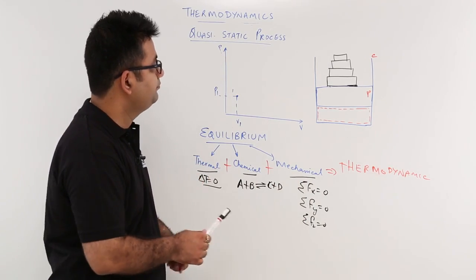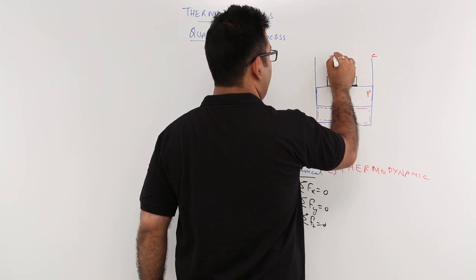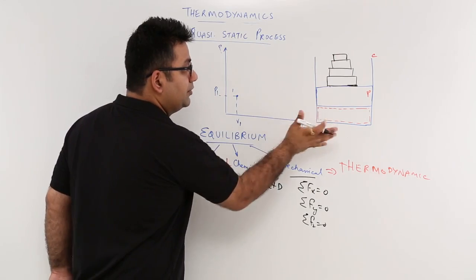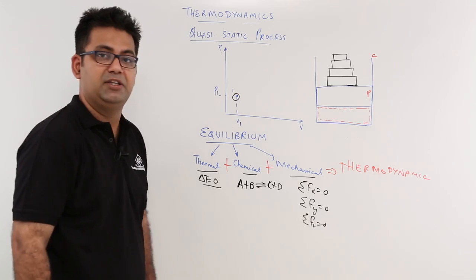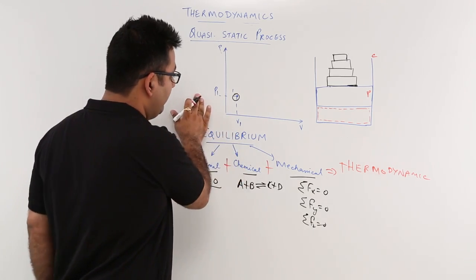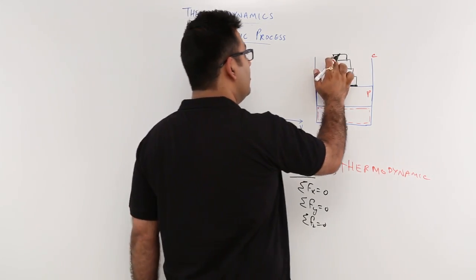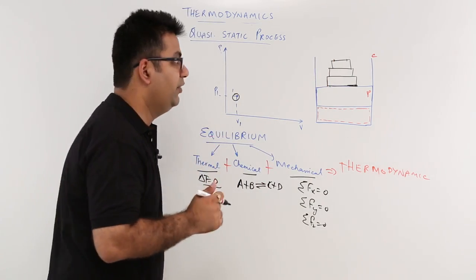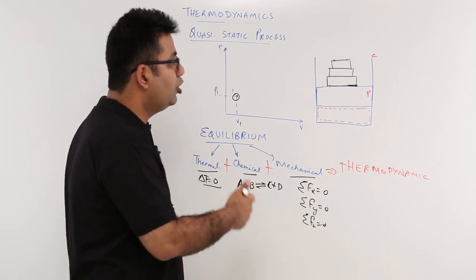Now, before removing a weight, let us assume that at this particular condition the state of the system is state 1, where the pressure is P1 and the volume is V1. When you remove the first weight, what happens? The pressure will decrease and the volume will increase.